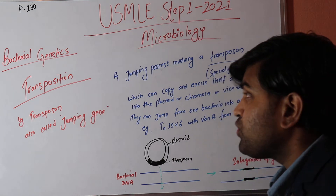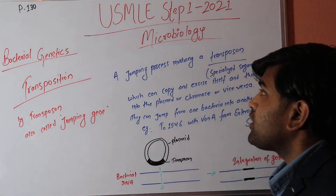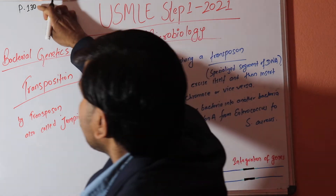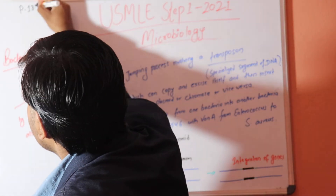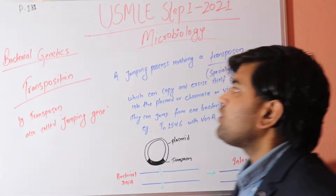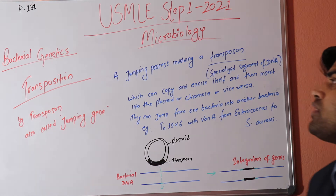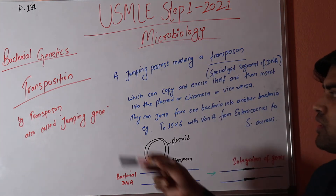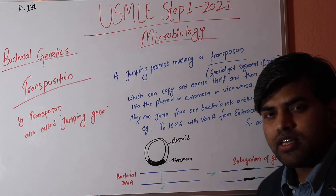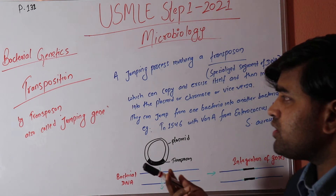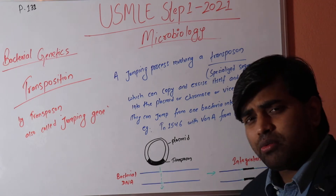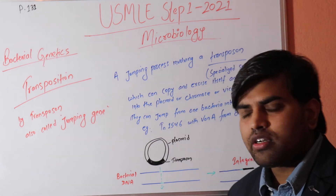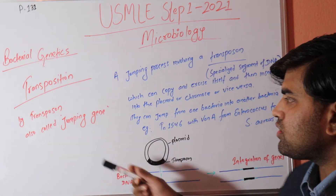Hello and welcome again. Today we are on page 131 and we are talking about the US Step 1 2021 microbiological section about bacterial genetics. We have talked about transformation, conjugation, and transduction, and now there will be another and last topic.